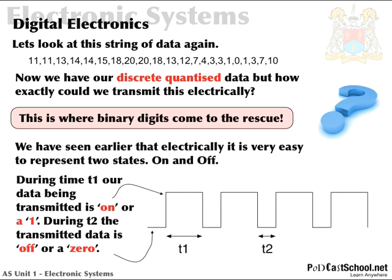You know that a digital signal can either be just on or off — a zero or a one, a low or a high. There's nowhere else a digital signal can be. Unlike an analogue signal, which can take up any state in an infinite amount of values, in digital signals we only have two values. So that's just a little bit of revision.